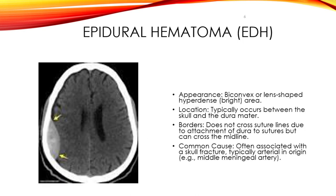An epidural hematoma develops as a result of arterial bleeding, most frequently due to a tear of the middle meningeal artery. It is a convex-shaped hyperdense area between the skull and the dura mater.